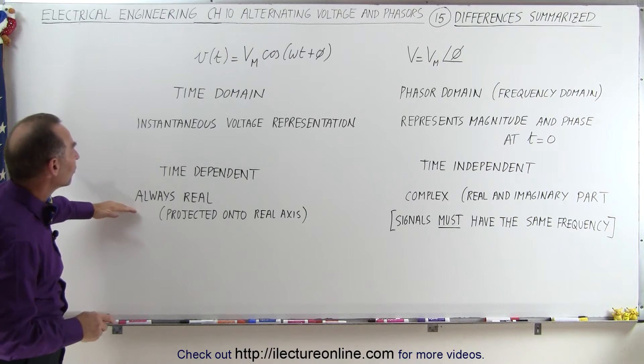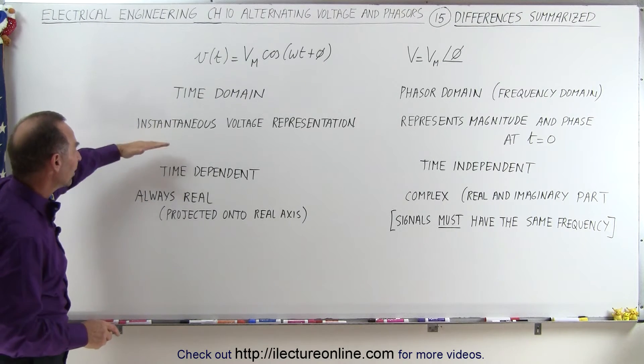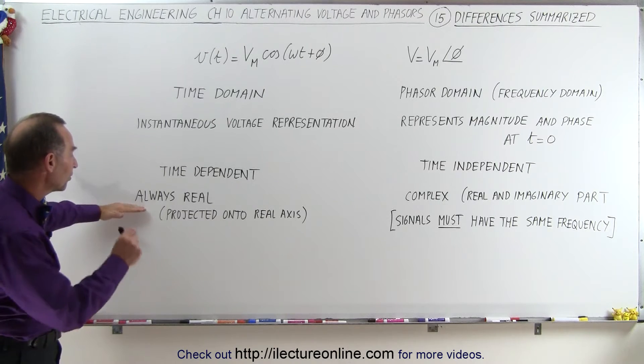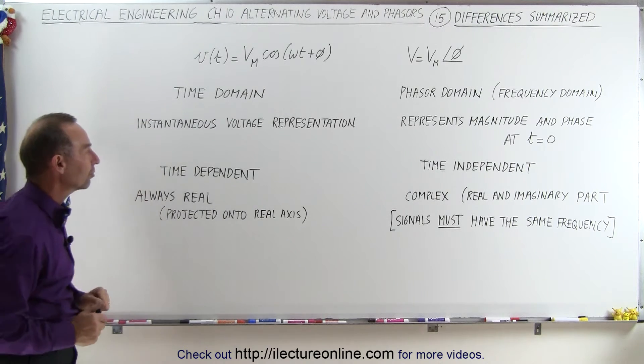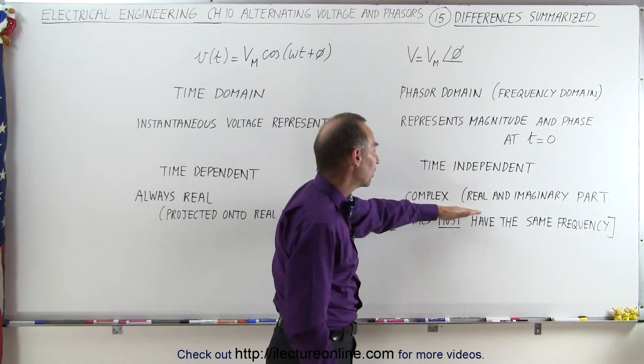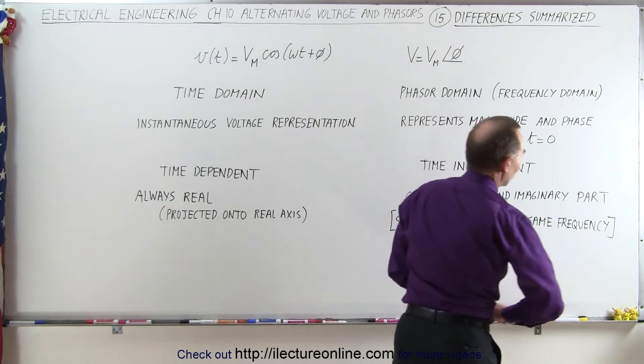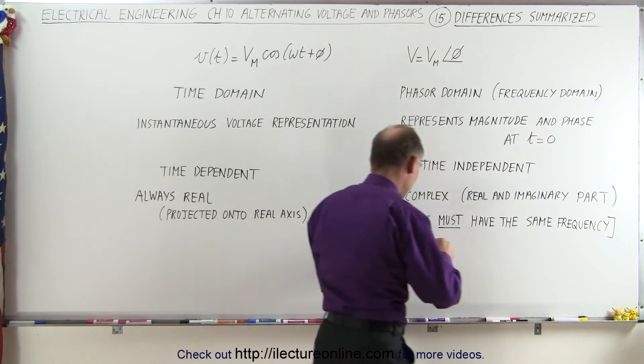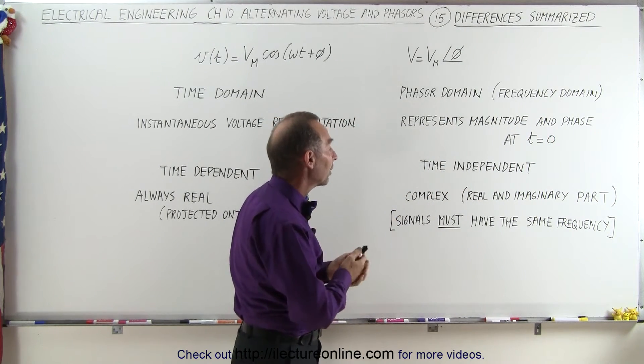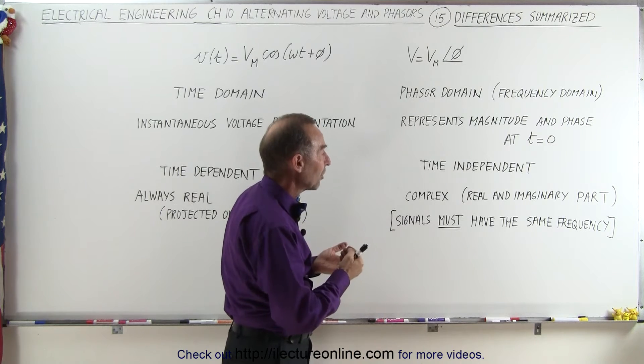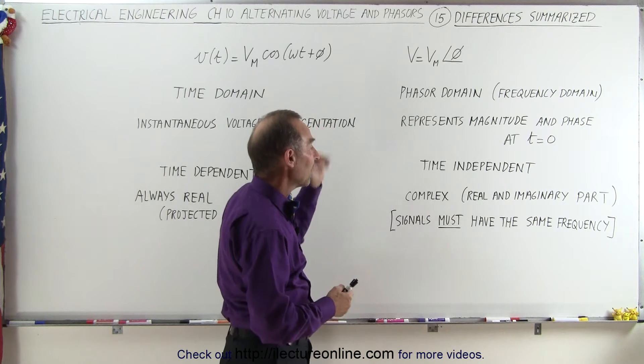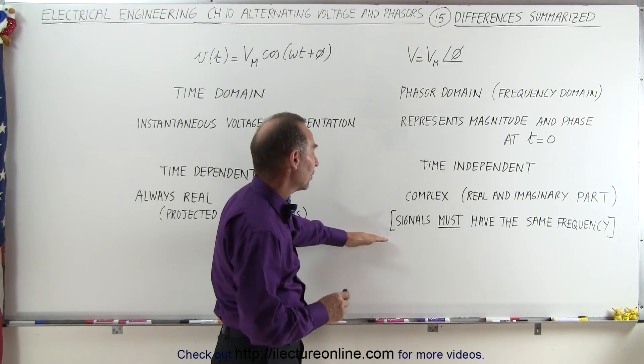Also, realize that this is always going to be a real voltage. It's the projection onto the real axis, the voltage axis. So you always get a real voltage out of this equation. And this representation gives you both the real and imaginary parts. And so if you want to draw the real part out of it, you can do that. If you want to draw the imaginary part of it, you can do that. The real part is the horizontal axis. The imaginary part is the vertical axis.